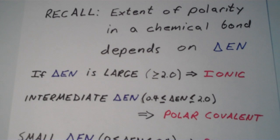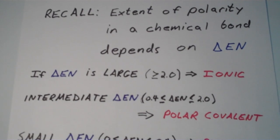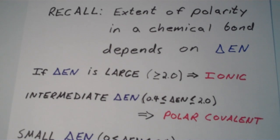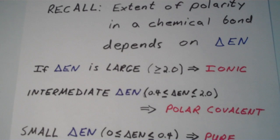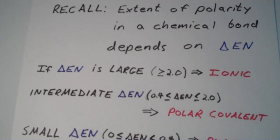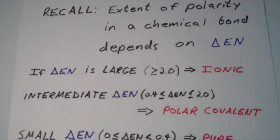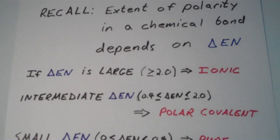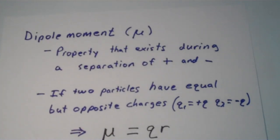So we have delta EN, that's one tool we can use to quantify the extent of polarity in a chemical bond. But the truth of the matter is that delta EN has an arbitrary reference point in it. It's a relative scale. Perhaps we can quantify the extent of polarity in a more absolute way, and that's where the dipole moment comes into play.